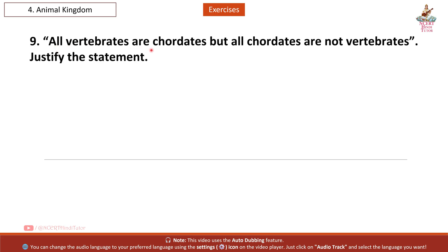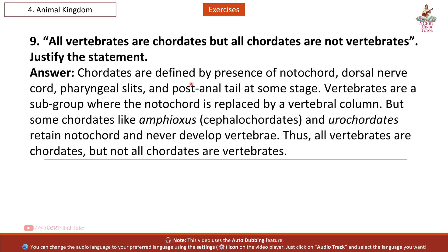Question 9: All vertebrates are chordates but all chordates are not vertebrates — justify the statement. Answer: Chordates are defined by the presence of a notochord, dorsal nerve cord, pharyngeal slits, and a post-anal tail at some stage. Vertebrates are a subgroup where the notochord is replaced by a vertebral column, but some chordates like Amphioxus (cephalochordates) and urochordates retain the notochord and never develop vertebrae. Thus, all vertebrates are chordates but not all chordates are vertebrates.